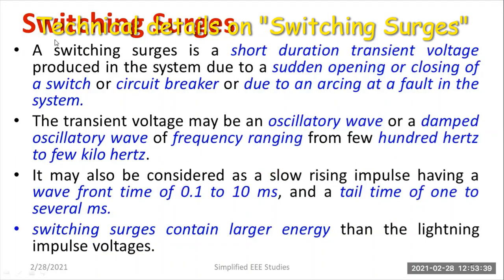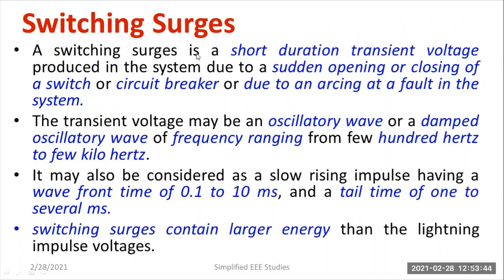First and foremost, let us understand the definition of switching surges. A switching surge is a short duration transient voltage produced in the system due to a sudden opening or closing of a switch, circuit breaker, or isolator, or due to arcing of a fault in the system. Majorly, switching surges are caused due to opening and closure of switchgears, especially circuit breakers, isolators, etc.